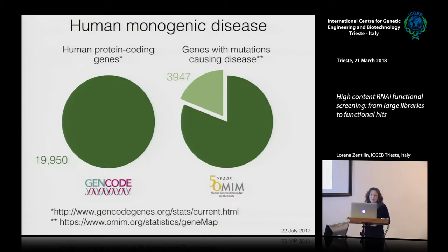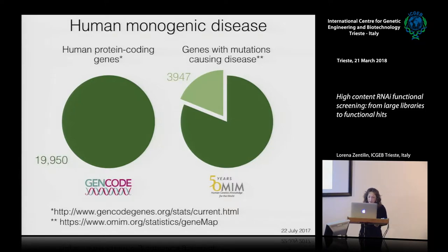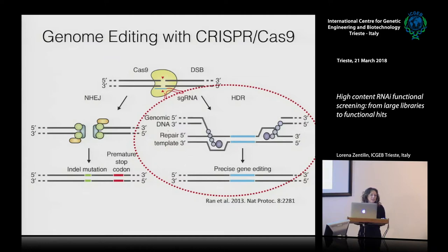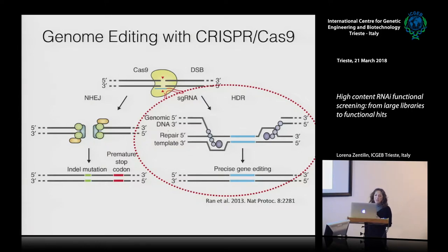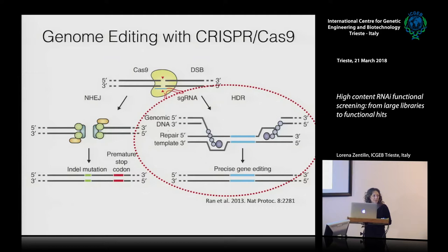Gene therapy can provide some solution by replacement therapy, but sometimes, especially in the case of dominant mutations, it is not possible to solve this problem with that approach. The gold standard of therapies for inherited monogenic diseases would be the precise correction of the mutation, possibly by homologous recombination with a suitable template. The coming onto the scene of bacterial CRISPR nucleases has revolutionized the field, offering new hopes for treatment of genetic diseases.